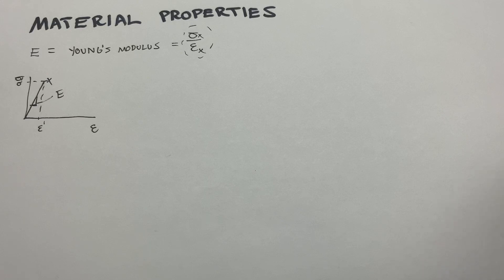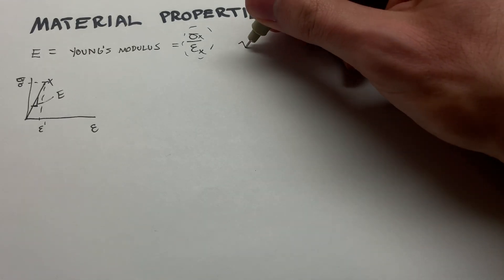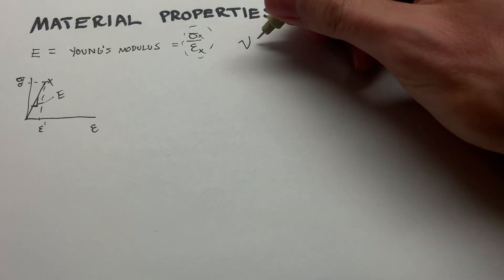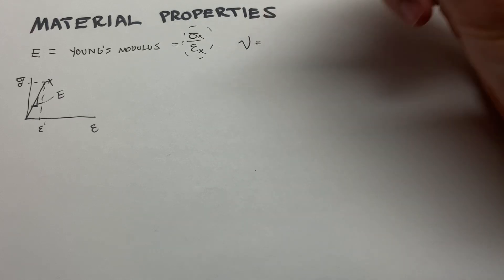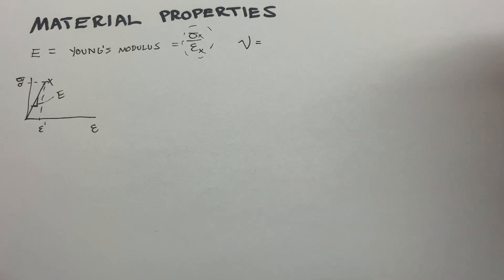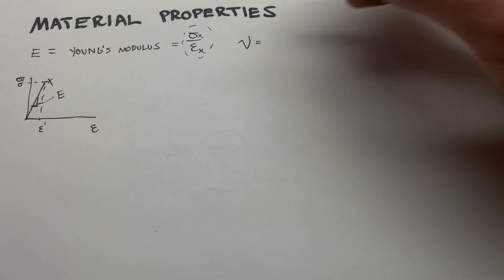The next one to talk about is Poisson's ratio, denoted NU or V — I can never tell which is which, that's a hard one. I like it when Greek letters are easier to distinguish from English letters. It's like omega and W.